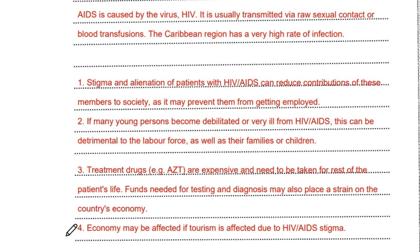Social and economic impacts of AIDS in the Caribbean: One, stigma and alienation of patients can reduce their contributions to society — employers may discriminate or co-workers may refuse to work with them. Two, many young persons aged 20–30 become debilitated, reducing the labour force and impacting families and young children. Treatment drugs such as AZT are expensive, difficult to obtain, and must be taken for life. Funds needed for testing and diagnosis place a strain on the economy. Additionally, tourism may be affected due to HIV/AIDS stigma, as has occurred in some sub-Saharan African countries.